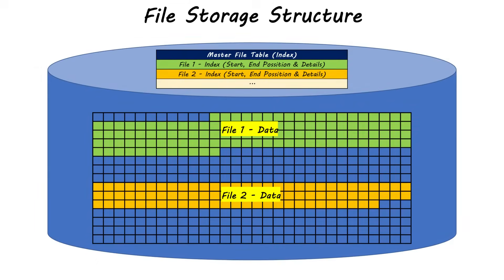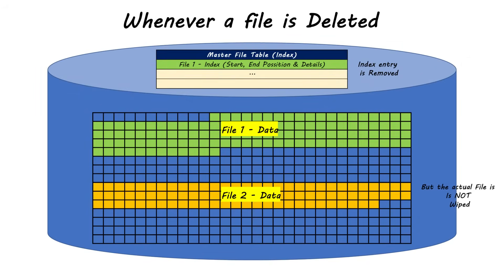Every Android storage has a master file table — this is like the index of a book. It tells the operating system where the actual file begins and ends. Whenever a file is deleted, the index entry is removed, but the actual file is not wiped.